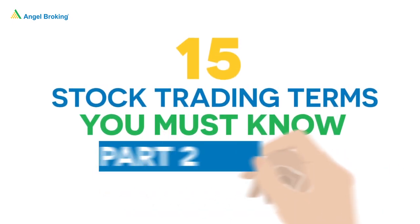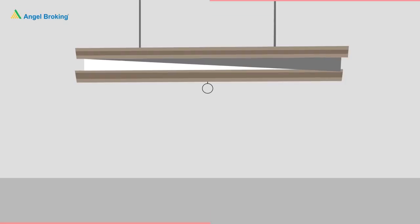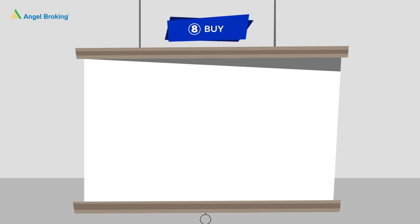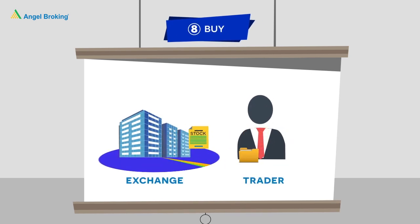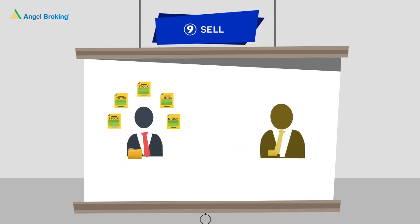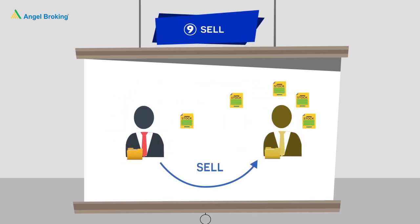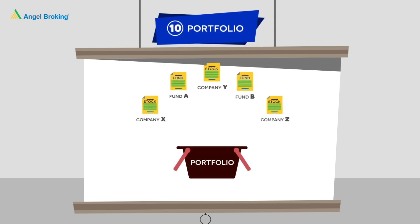15 key stock trading terms you must know, Part 2. 8: Buy — to buy means to take a position or to buy shares in a company. 9: Sell — conversely, sell means getting rid of the shares purchased. 10: Portfolio — a portfolio is a basket of shares usually held by a person or a fund.